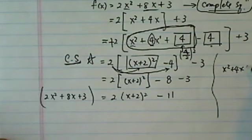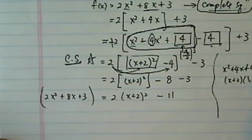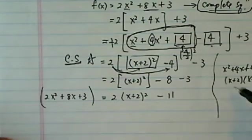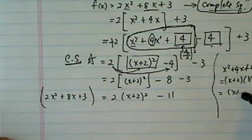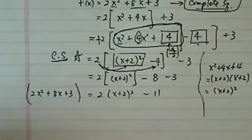x² plus 4x plus 4, I basically factored it. It turned out to be a perfect square in that. That's where the name comes from, complete square, literally.